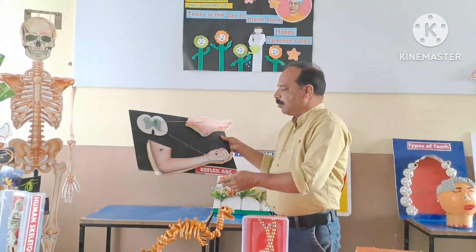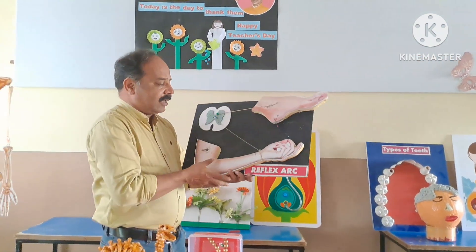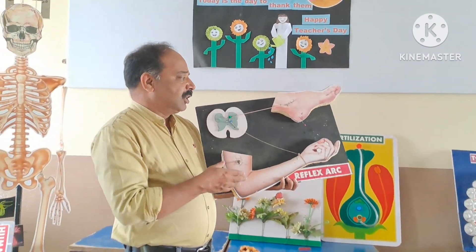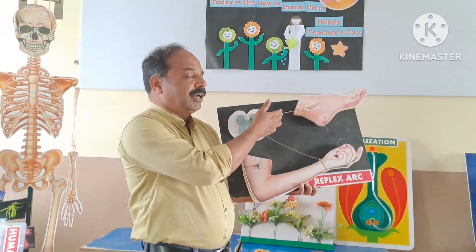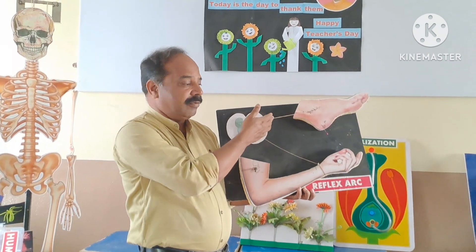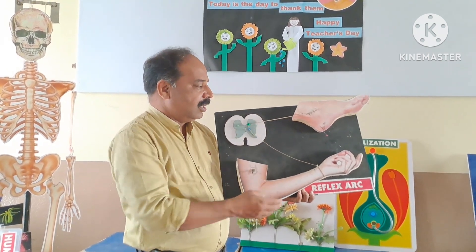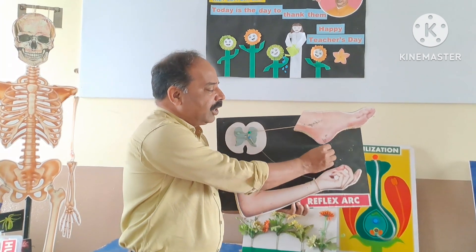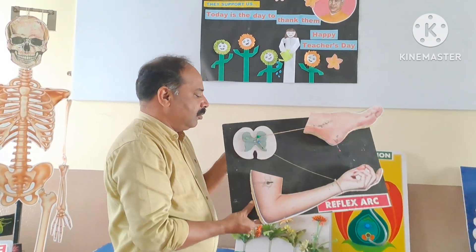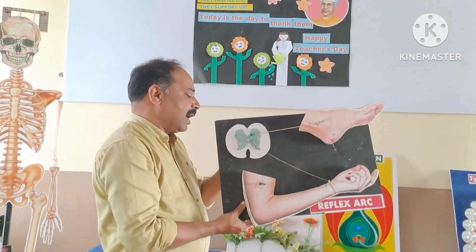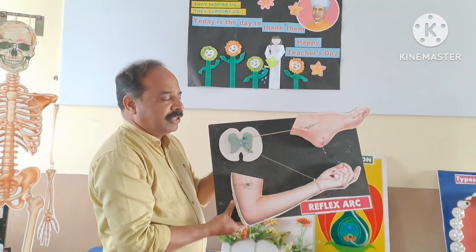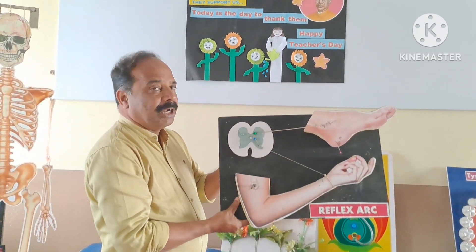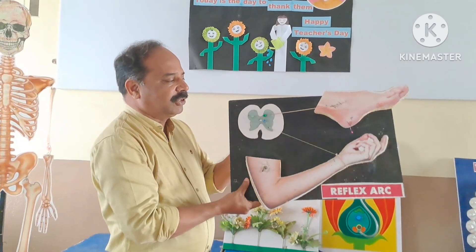This is about reflexes. Now the reflex arc consists of the receptor, next is the sensory nerve, motor nerve, and effector. When an object penetrates our body, how the hand or receptor reacts — the effector removes it. We can explain with the help of this model.